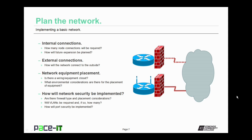Your plan should also cover how network security will be implemented. Are there specific types of firewalls and placement considerations for those firewalls? Will virtual local area networks (VLANs) be required, and if so, how many? Also, how will your switch port security be implemented? All of these go into a successful network plan.